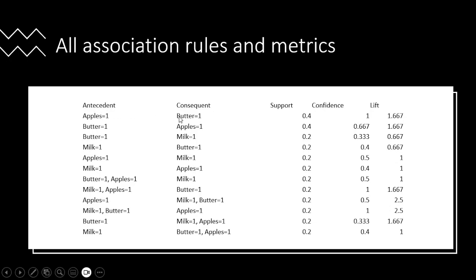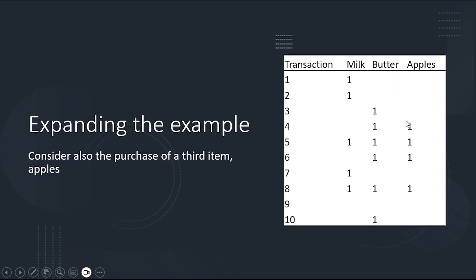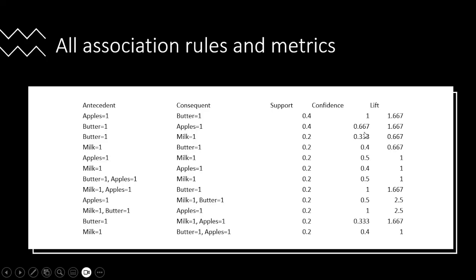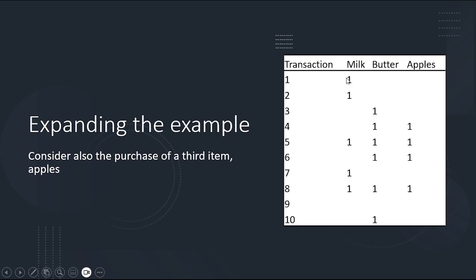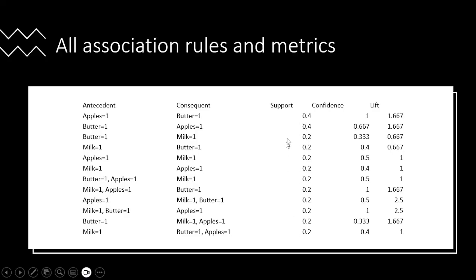The support is the same for both directions of an item set — for apples and butter, that's 4 out of 10, or 40%. That's where the 0.4 comes from. The support column in the output is for both items combined. Orange also runs a separate output giving support for each item individually. Many of the other item set supports are 0.2, like milk and butter — 2 of the 10 transactions have both.